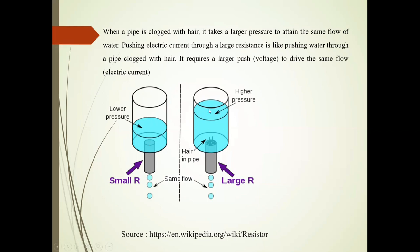And see this in the second figure, the pipe is clogged with air, so its resistance is large. So to obtain a sample of water, it requires higher pressure. Same condition applies to resistances.